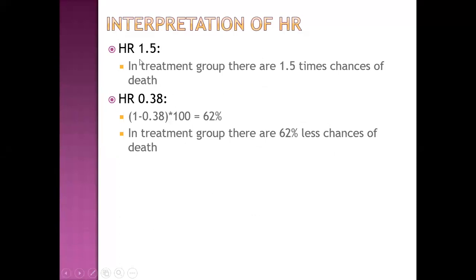Interpreting the hazard ratio: if the hazard ratio is 1.5, it means that in the treatment group there are 1.5 times the chances of death compared to the control group. However, if the hazard ratio is less than 1, we subtract it from 1 and multiply by 100. For example, 0.38 gives 62%, meaning there are 62% less chances of death in the treatment group compared to the control group.